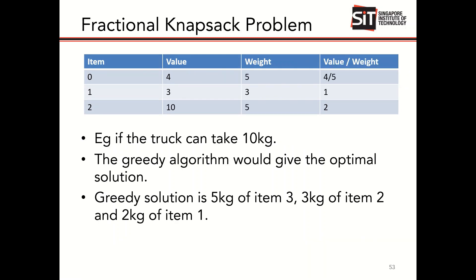The first thing you want to do is find the value per weight of each item, because for each kg you want to take the item that has the most value. To calculate this, take the value and divide it by the weight. For item 0 the value per weight is 4/5, for item 1 it equals 1, and for item 2 it equals 2. With the greedy algorithm taking the maximum value per weight item first, for the fractional knapsack problem it will be ideal — we first take 5 kg of item number 2.